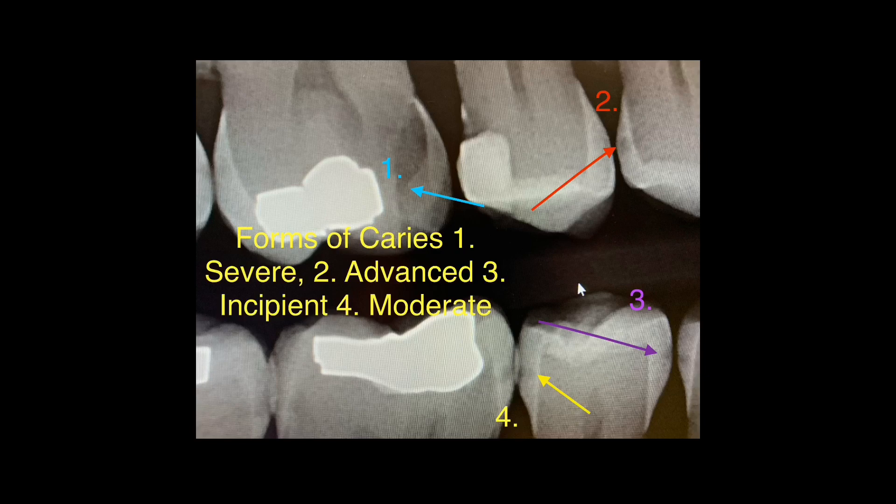In this short clip on oral radiology, I'll talk about radiological features that often come up in clinical judgment exams or other dental board exams. This is one of the most common radiograph types where you'll be asked to identify teeth, locate caries, or determine what type of caries is present. In this clip, you can see various forms of caries co-existing in the same patient.